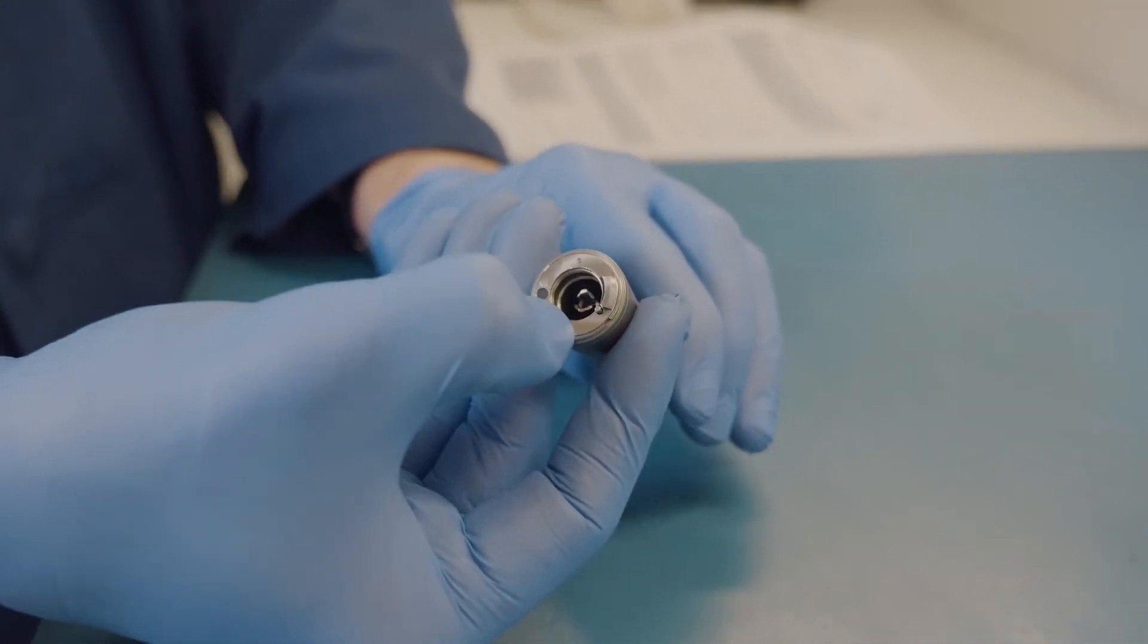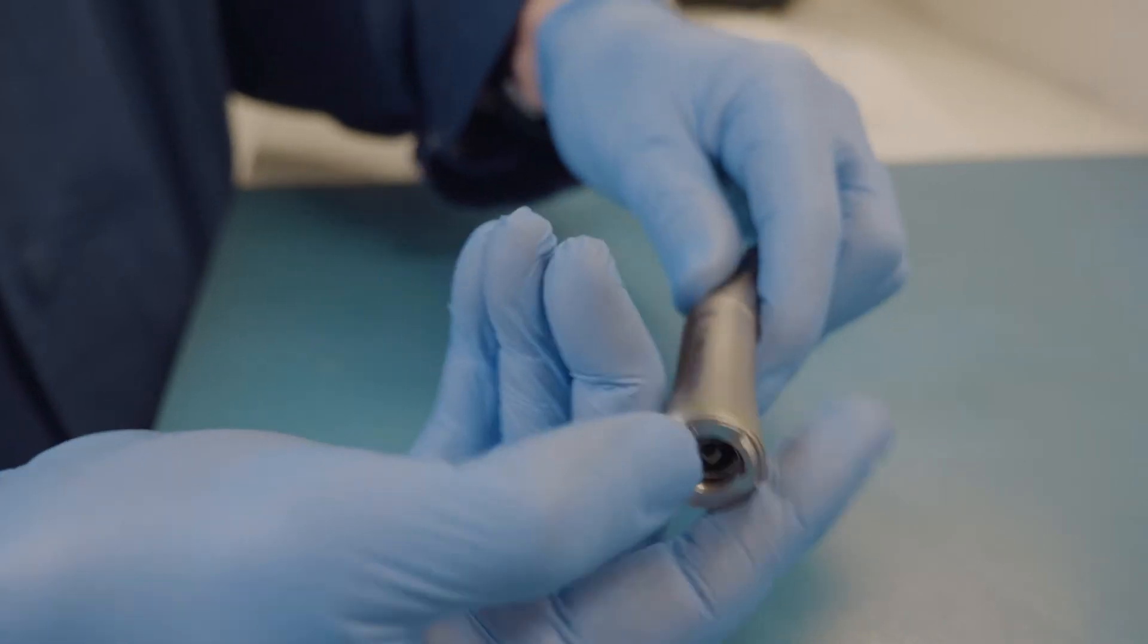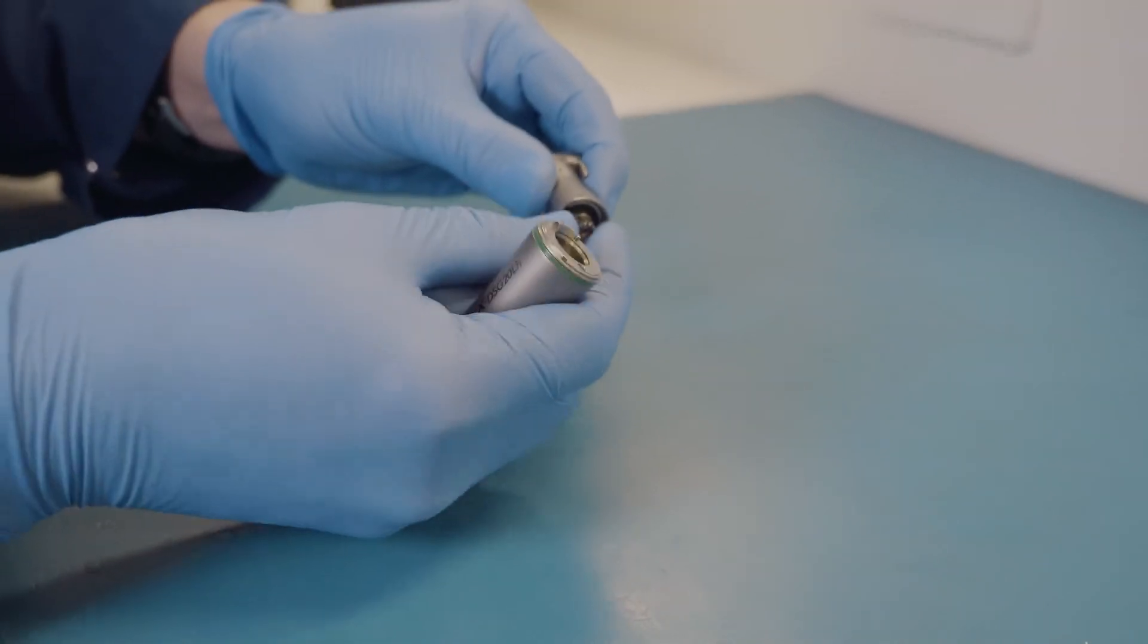Firstly, check that the lock pin is disengaged. Hold the shank of the handpiece and turn the head. Pull apart the head, drive shaft, and shank.